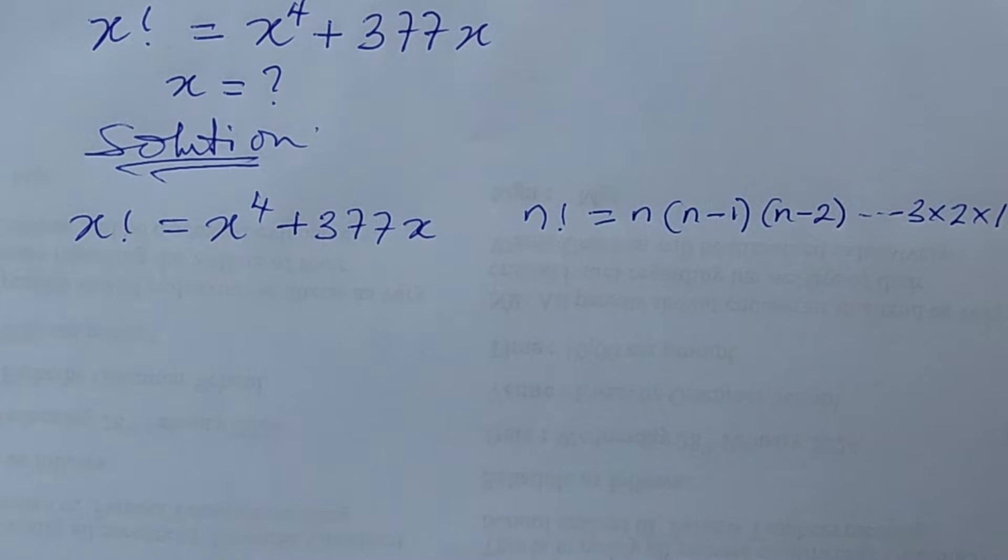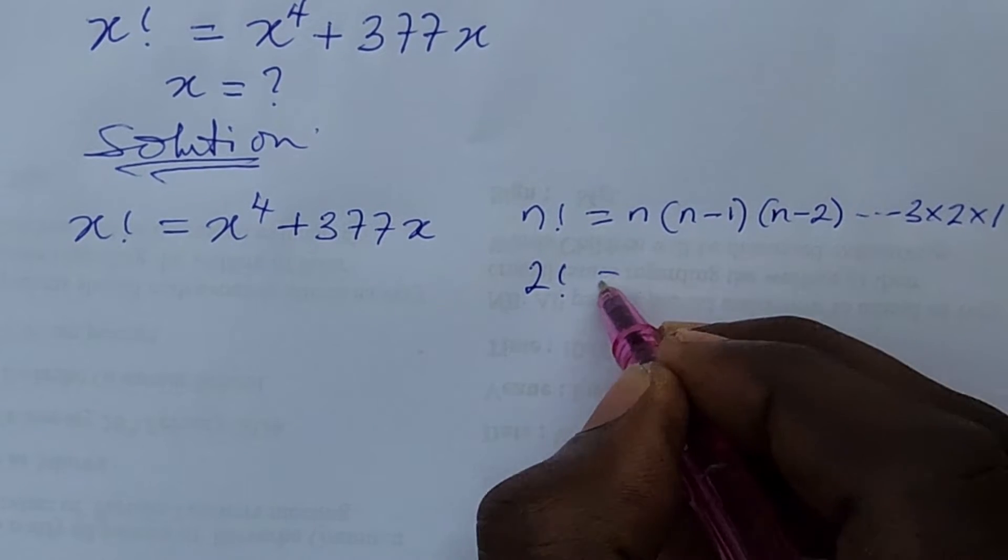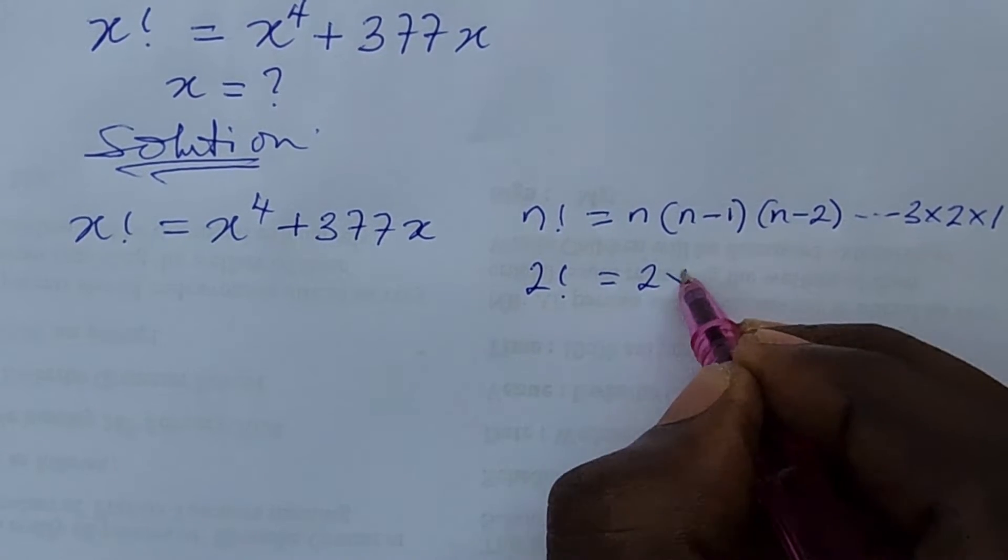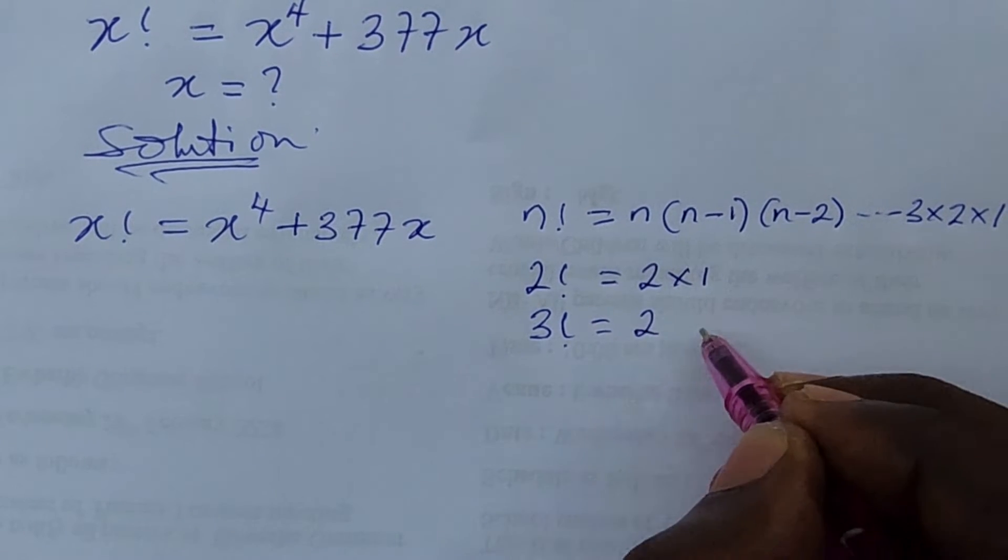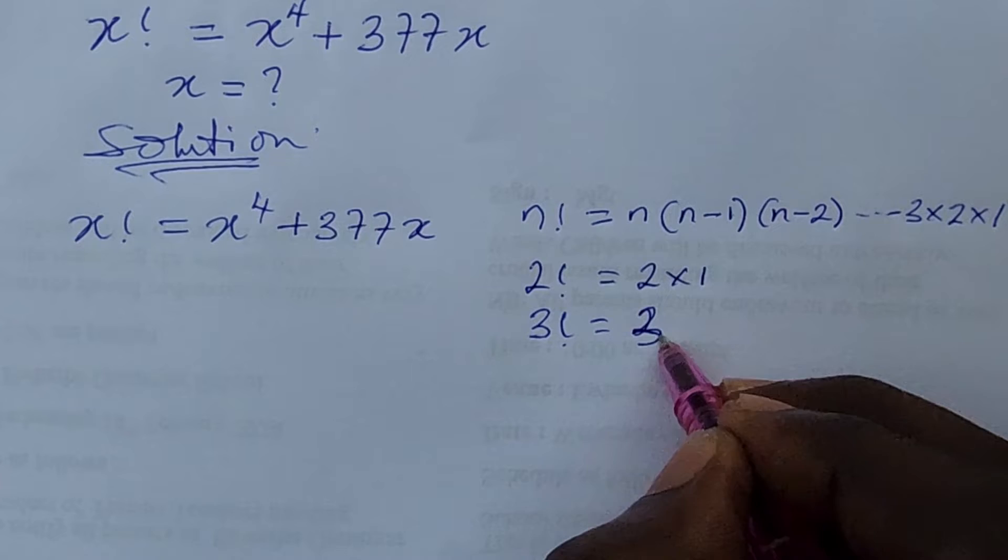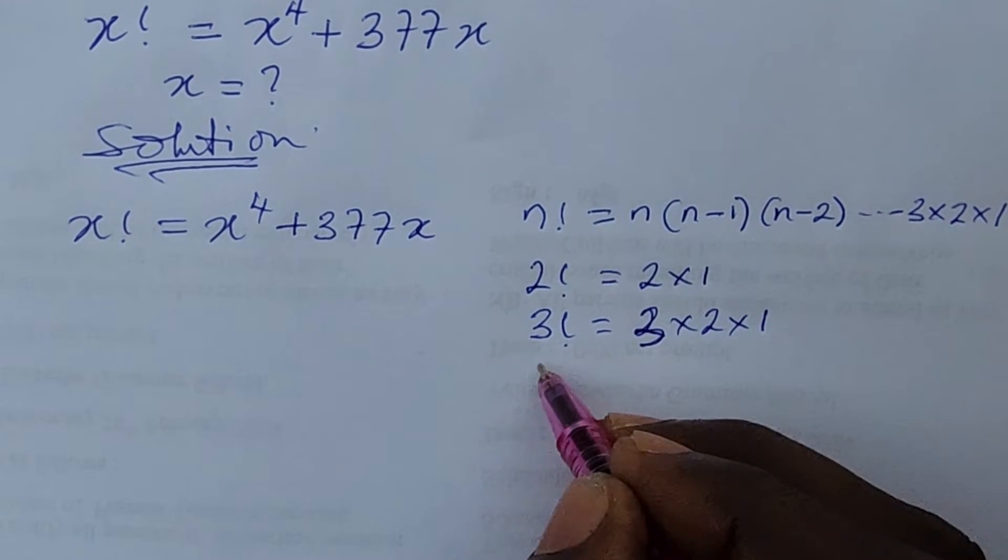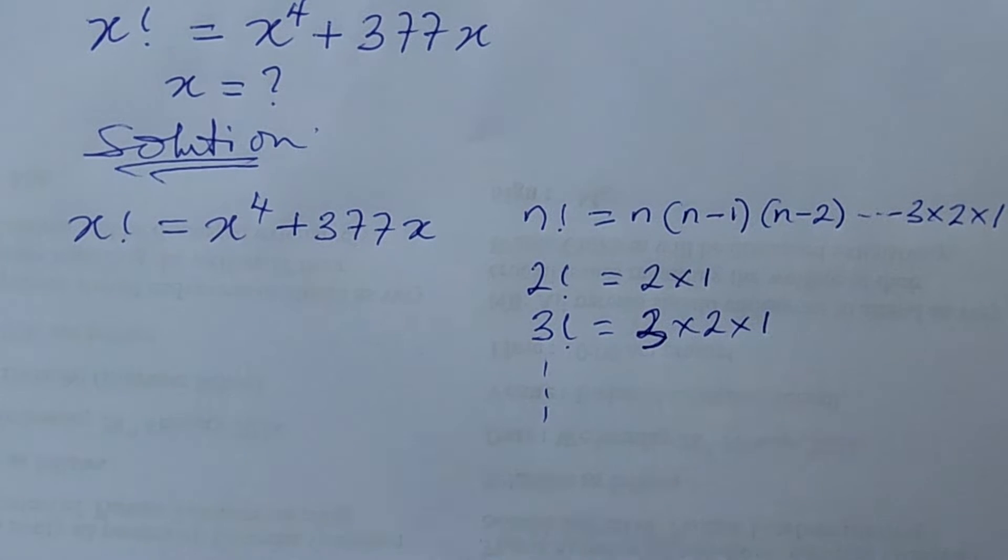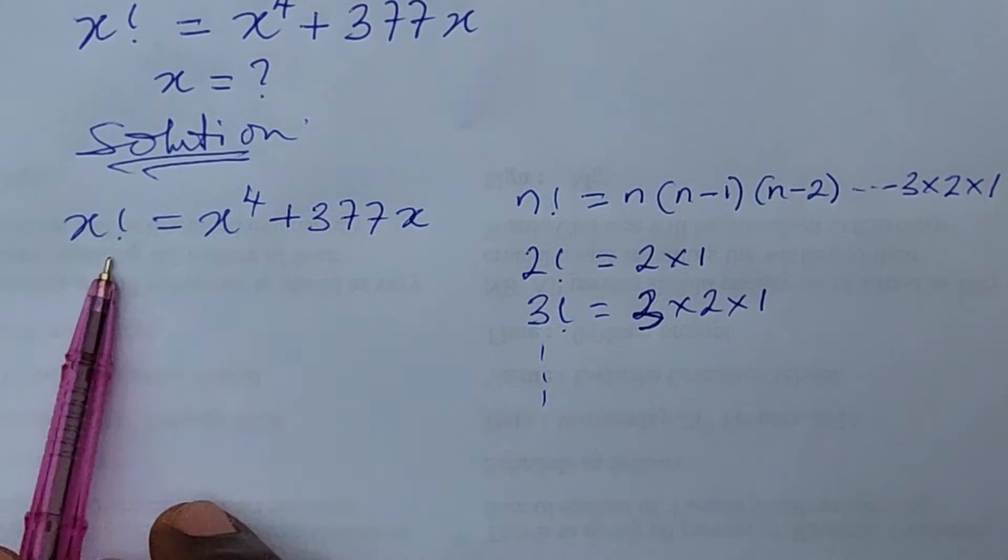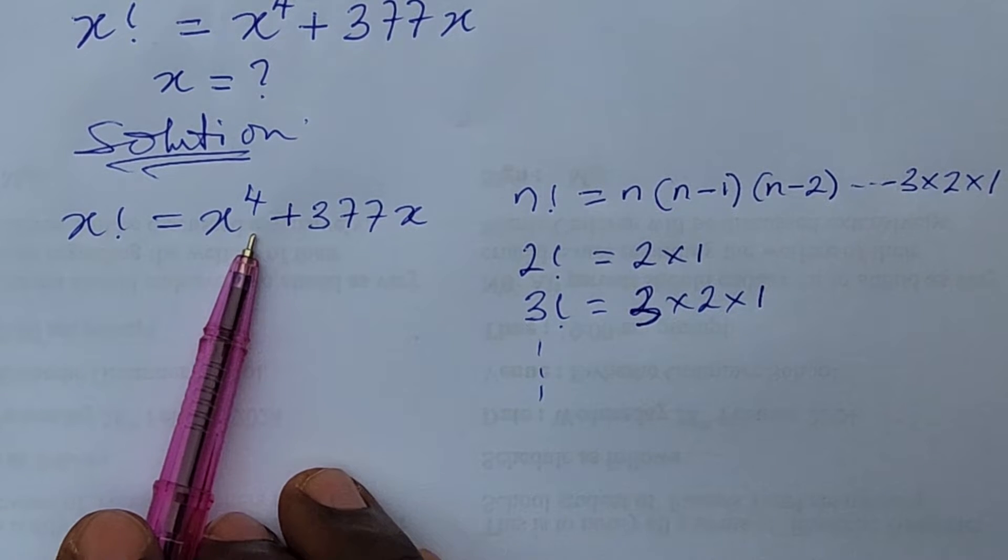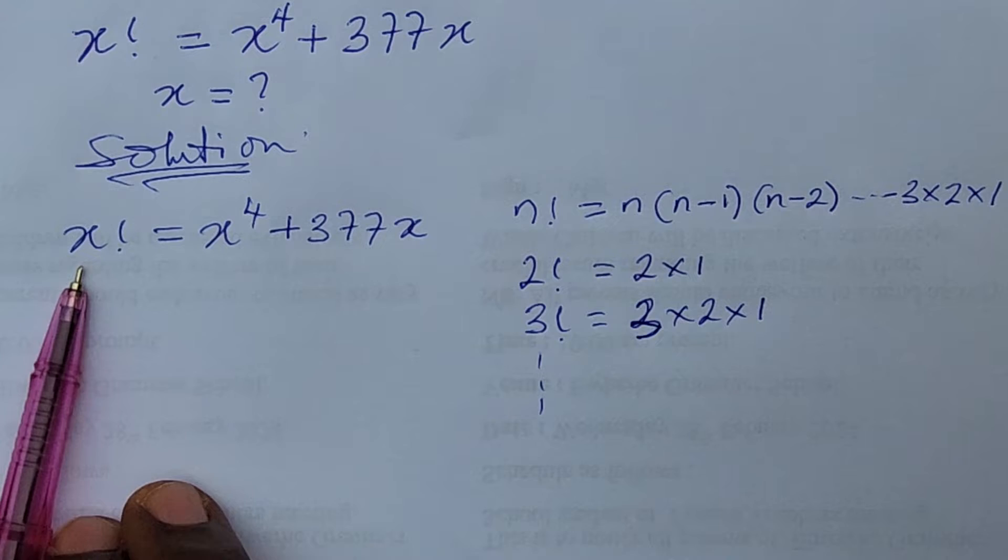So it does implies that if you have your 2 factorial this will give us 2 times 1 and if you have 3 factorial this will give us 3 times 2 times 1. So if we bring this definition of factorial to this left term of our equation here so we can easily rewrite this expression.